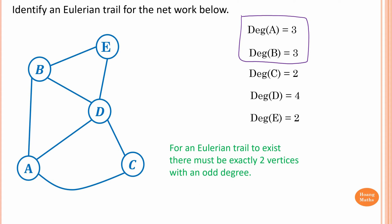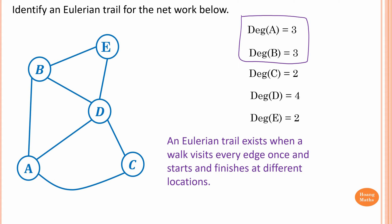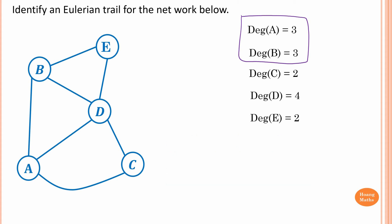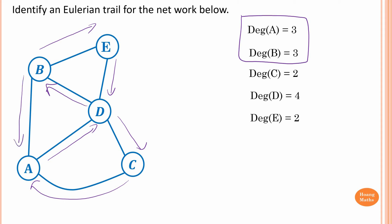An Eulerian trail must visit every edge once and start and finish at different vertices. For example, I can start at B, go to E, and then from E to D, and then D to C, and then C to A, and A I go to D, and from D to B, and then from B I go to A. I start at B and I finish at A — different vertices — and I visit every edge once.